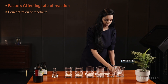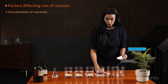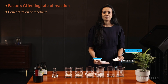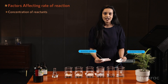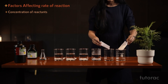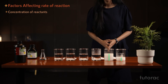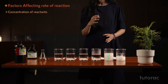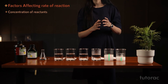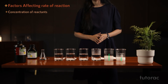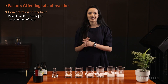The first beaker has one tablespoon of baking soda and the other has two tablespoons of baking soda. I'm going to put these two concentrations of reactants into the beakers. You can see that the beaker in which more quantity of baking soda was present, the rate of reaction was faster. That means the rate of reaction increases with the concentration of reactants.